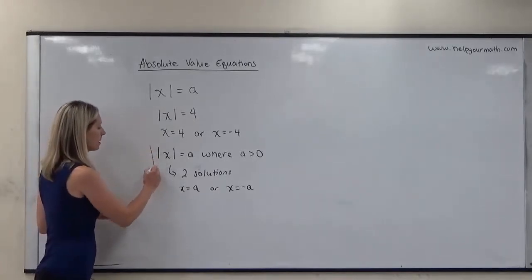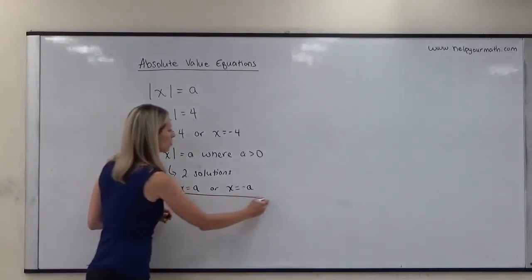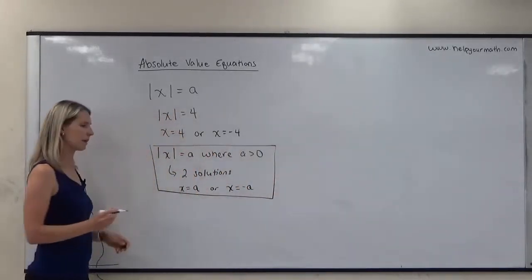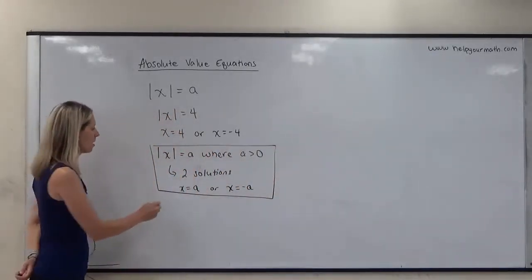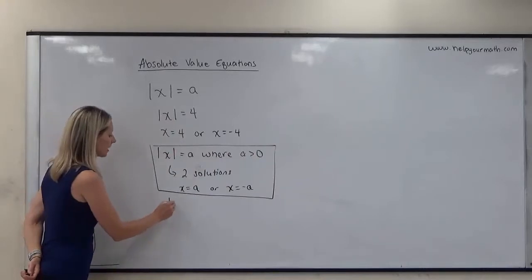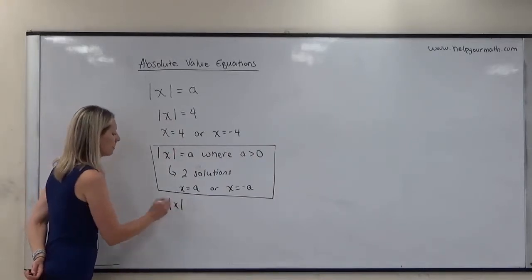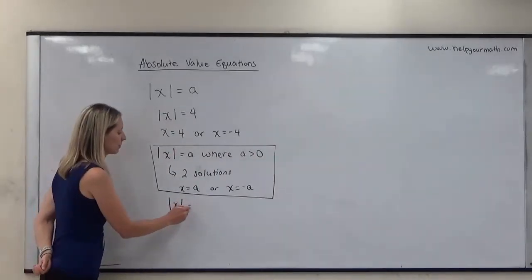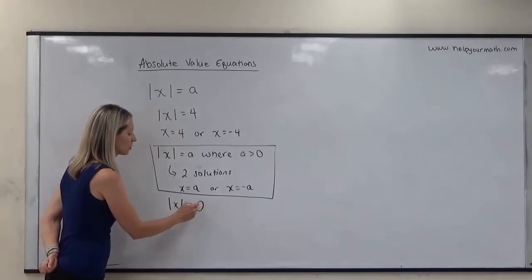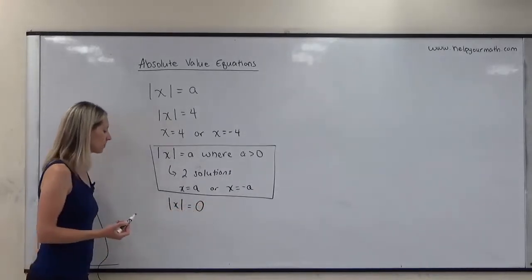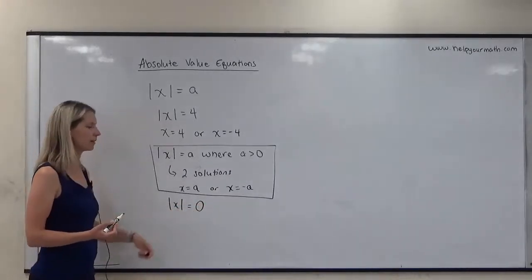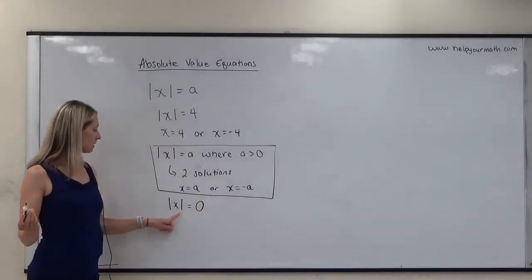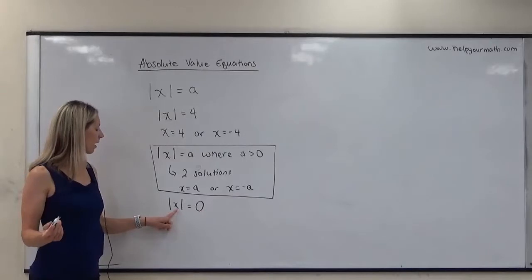That covers the case of two solutions when the absolute value equals something positive. Another case is when the absolute value is equal to zero. I'll write this as just equal to zero, since zero is a single specific number.